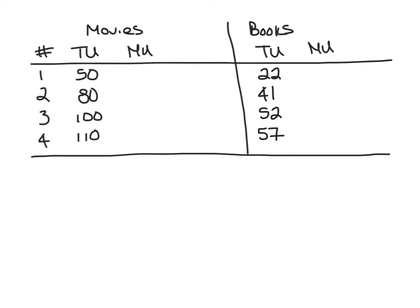The way we're going to approach this is through marginal analysis. Marginal analysis focuses on the margin, meaning it considers each purchase one at a time rather than thinking at the aggregate level. We need to first figure out the marginal utility of each movie and each book in order to determine which purchase would be the best first choice, and from there proceed with the second, third, and fourth purchases. The marginal utility of a movie or a book is equal to the change in total utility when she buys one additional unit, over the change in quantity.